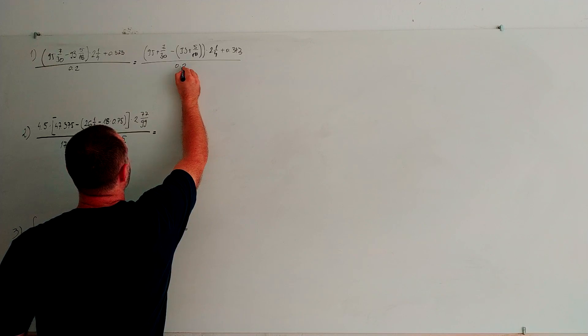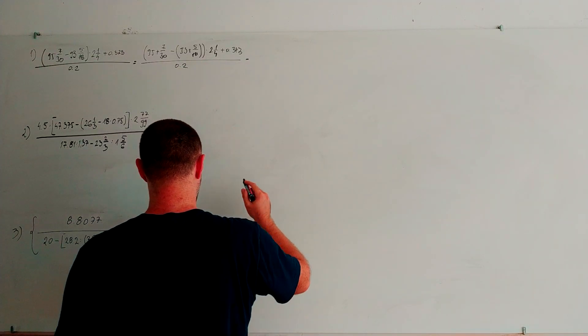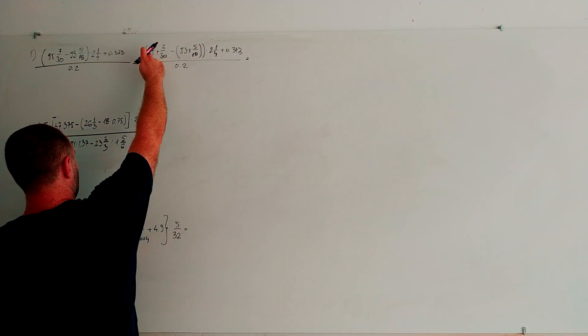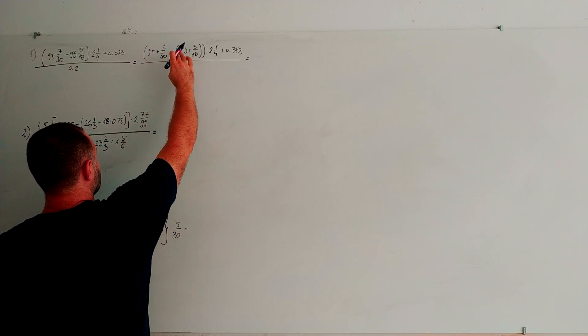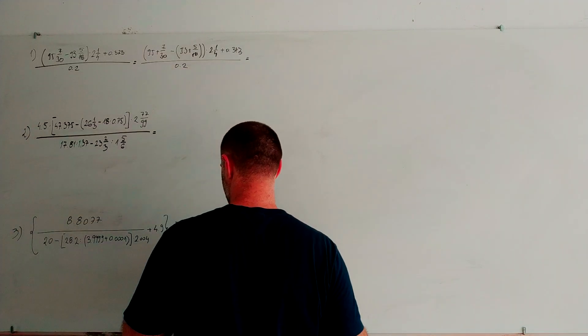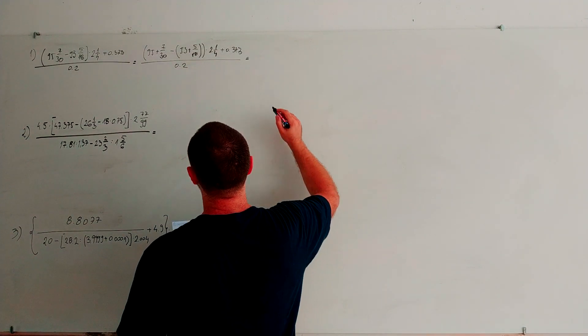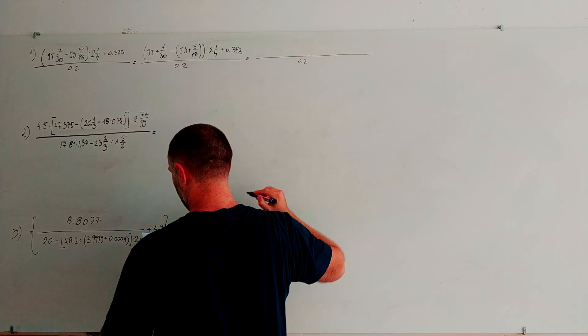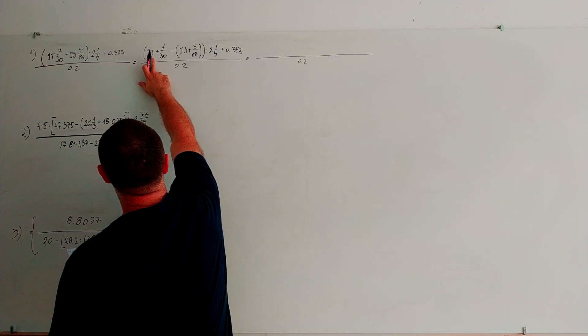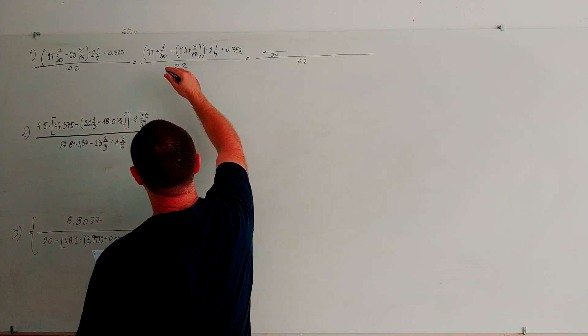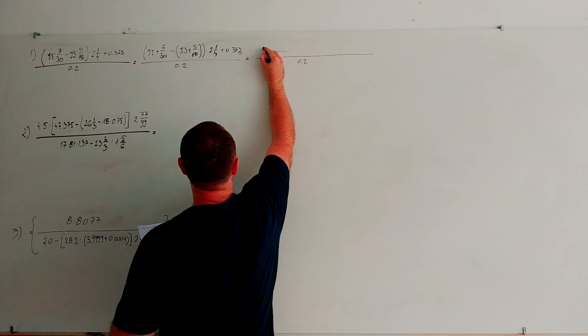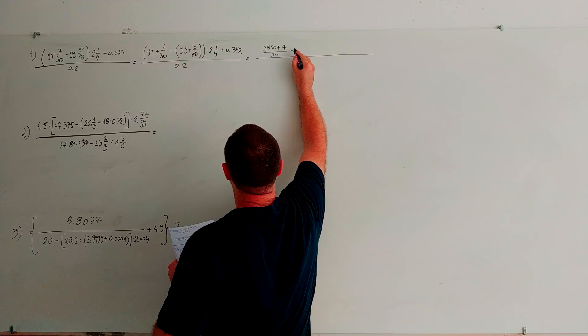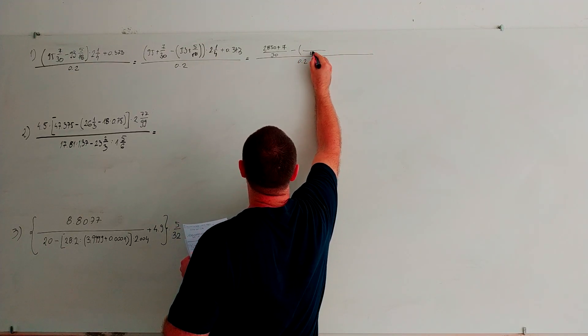Now we are going to add these two numbers, add these two numbers, and subtract these two. The lower number is 30. 30 multiplied by 95 is 2850 plus 7 minus 18 is the same. 18 multiplied by 93 is 1674 plus 5.